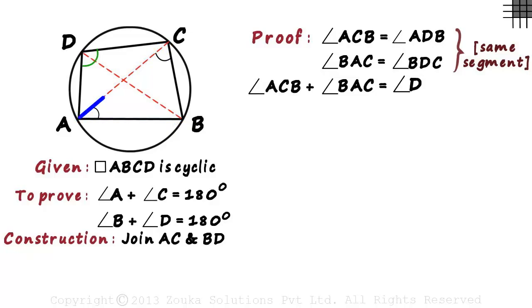If we look at triangle ACB, the only angle left out is angle ABC. If we add angle ABC to the left hand side, we will get the sum of all the angles of triangle ACB.